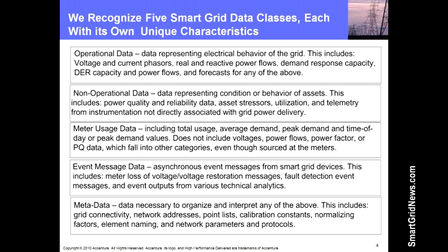We also think about five classes of Smart Grid data, and three of these classes are quite familiar: operational data, which is largely the kind of data you associate with SCADA; non-operational data, which is mostly asset monitoring data; and meter usage data — all very familiar to most people who work with utilities. In addition, there are two more classes that haven't gotten as much attention but are quite important. Event message data is a really big one — as we put more smart devices on the grid, we see these devices generating asynchronous event messages, often in big bursts that we have to process with low latency. And then metadata, which is all the ancillary information we have to keep track of to be able to use everything else.